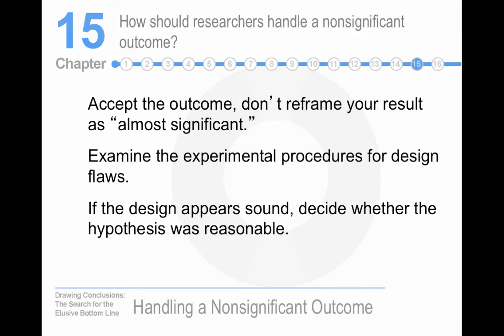How do we handle a non-significant outcome? Don't reframe your results as being almost significant. You sometimes see 'results approached significance' or 'means going in the predicted direction' — you see that all the time with student research. If that's the case, just run more participants. The increased power will push you to significance statistically.